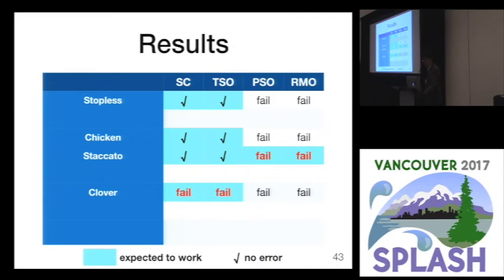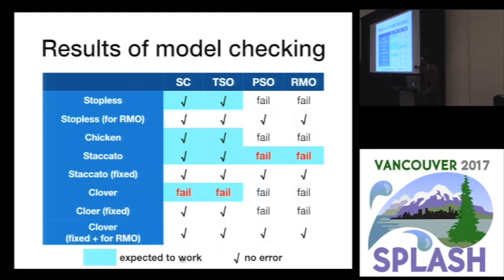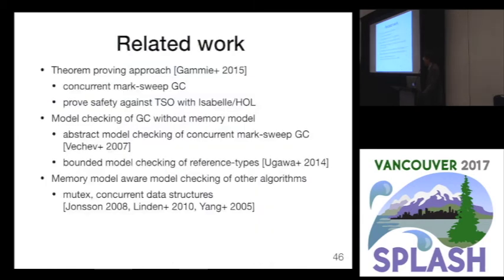We also found that Clover doesn't work even under sequential consistency, and we fixed these bugs and verified they work correctly. We also ported Stopless and Clover to relaxed memory ordering and verified they work correctly. Related work includes theorem-proving approaches, model checking of garbage collection without memory models, and memory-model-aware model checking of other algorithms such as Mutex and Deque.